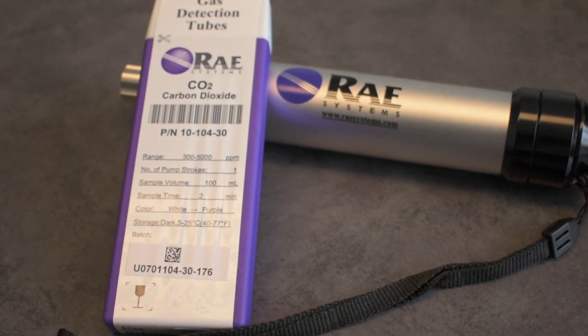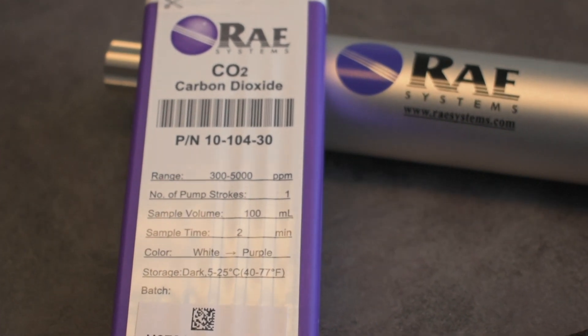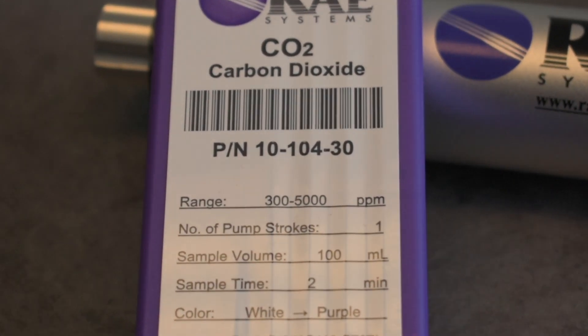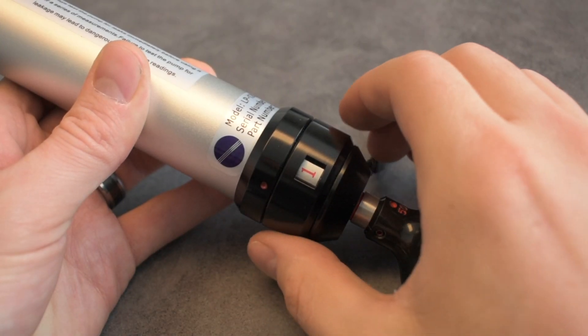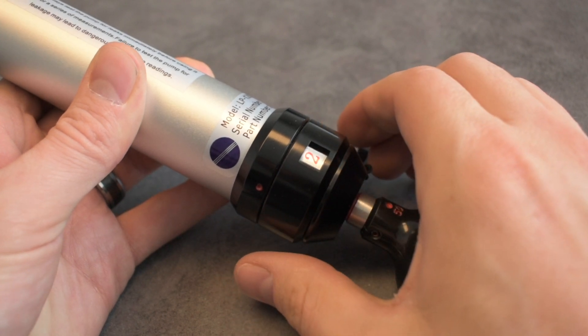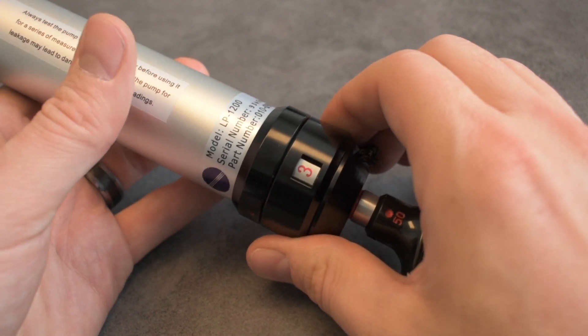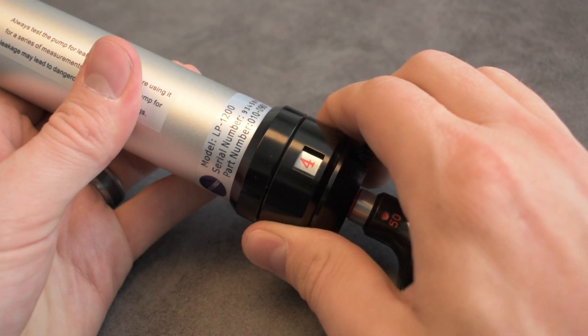Depending on the gas you're trying to sample and the range that you're looking for will determine the number of pump strokes. In this case, it says right on the package to use one full stroke and it will take two minutes to perform the sample. On this particular pump, there is a marker on the side of the pump body where you can set the counter to remind you how many pump strokes you need to take.